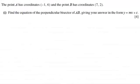Hi, now for this question we're told that the point A has coordinates (-1, 6), and the point B has coordinates (7, 2). We've got to find the equation of the perpendicular bisector of AB, giving your answer in the form y = mx + c, for 4 marks.